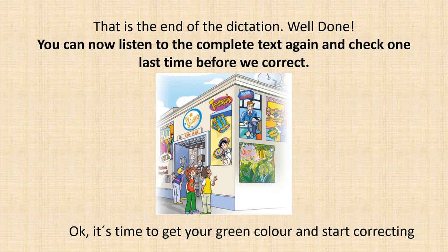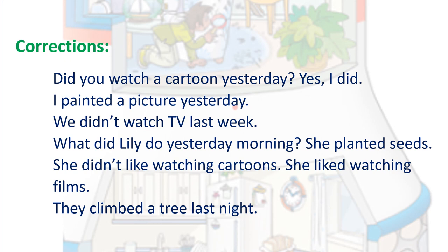Okay, it's time to get your green colour and start correcting. Here are the corrections. Take as long as you need to check all your work and see the mistakes that you've made. Remember, if you have three mistakes, write them five times. If you have more than three mistakes, just copy the whole dictation. And remember, you can play with the sentences and make pictures out of them. This way, you'll make sure you understand. Okay, see you soon, guys. Bye-bye.